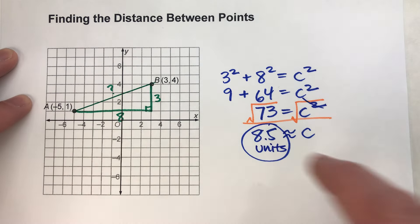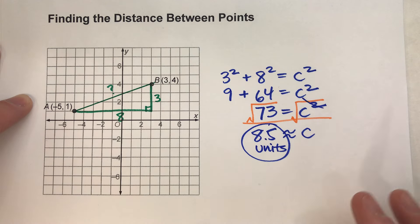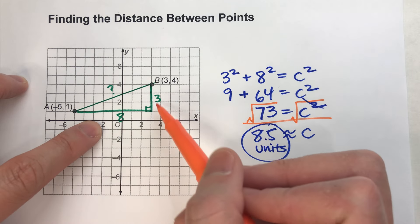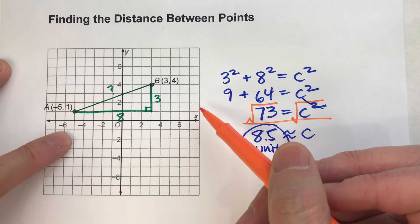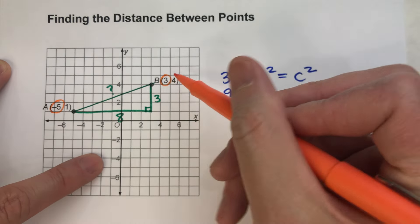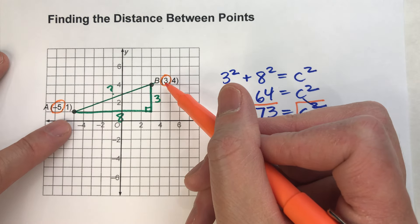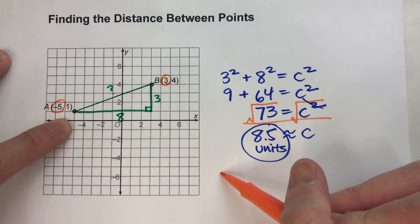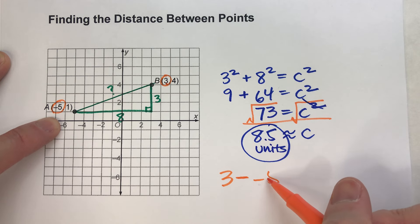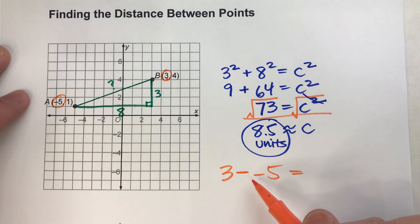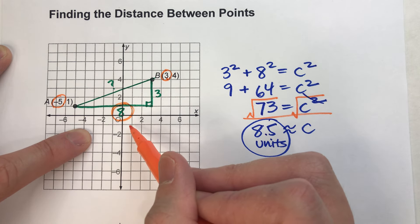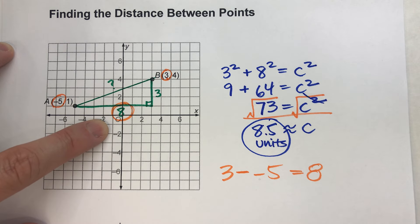All you have to do is connect up the points, turn it into a right triangle. Now, there might be a faster way to know the lengths of the legs of the right triangle. Because if you notice, the x-coordinate of this point A is negative 5. The x-coordinate of point B is 3. Watch what happens when I subtract them. I'll take that 3, I'll subtract the other x-coordinate, negative 5. 3 minus negative 5 is 8. And look at that horizontal leg length. It's 8.